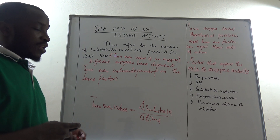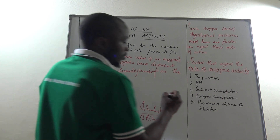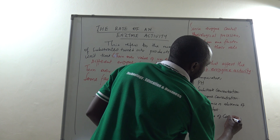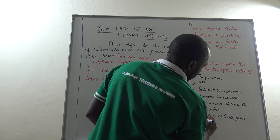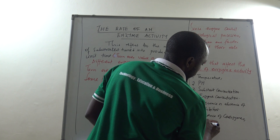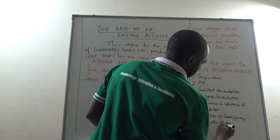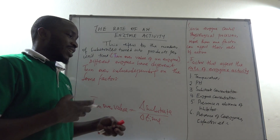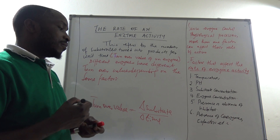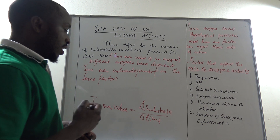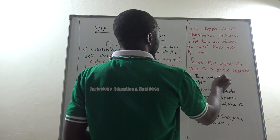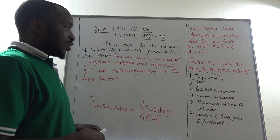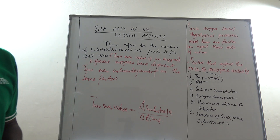Several inhibitors we shall discuss. Factor six is the presence of coenzymes, cofactors, and others. We shall see what things, when present, can alter enzyme activity. In our next discussion, we shall discuss more on the effect of temperature on enzyme activity. Thank you.